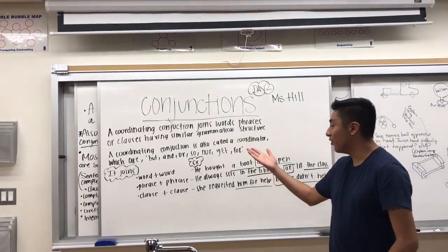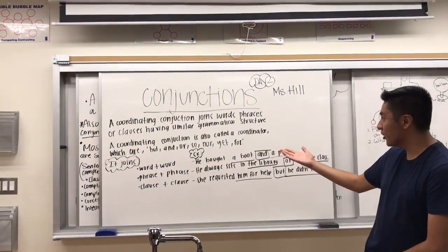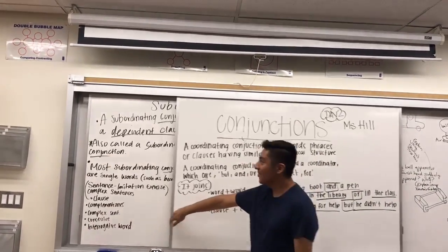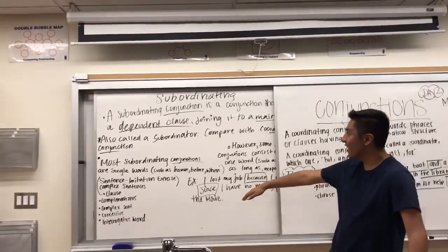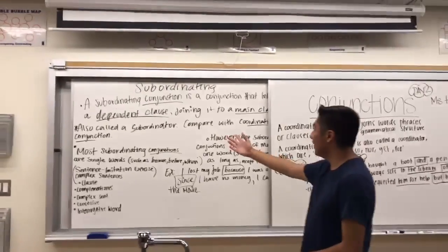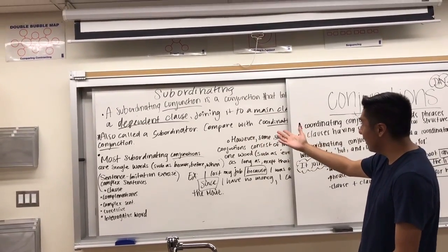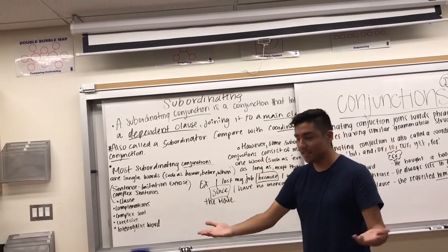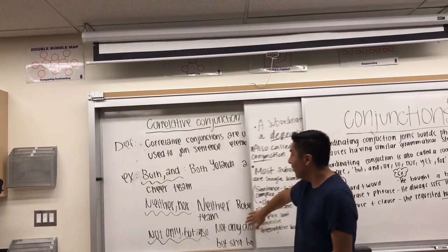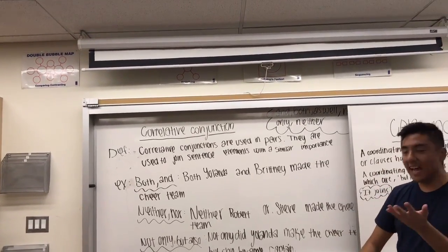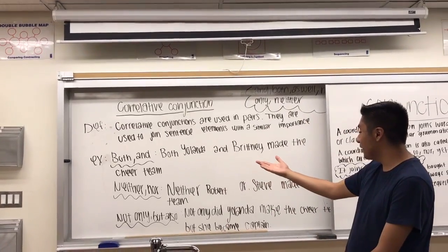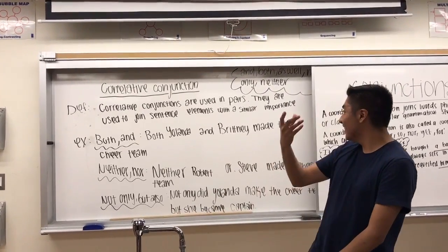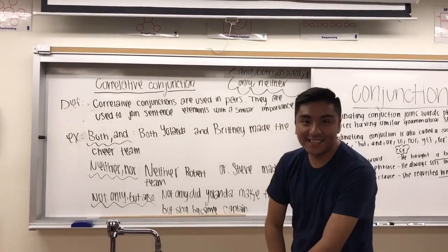A coordinating conjunction joins words and phrases. The difference with subordinating conjunctions is that those join dependent clauses to main clauses. And the last one — correlative conjunctions — puts words in pairs and joins sentences of equal importance.